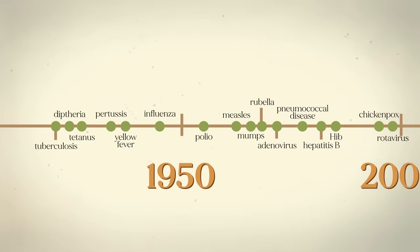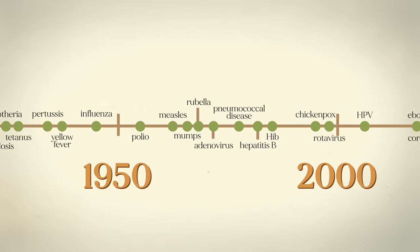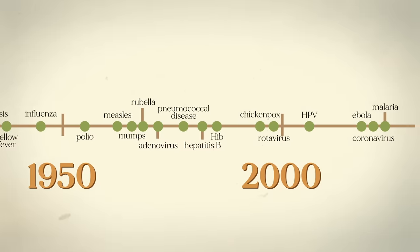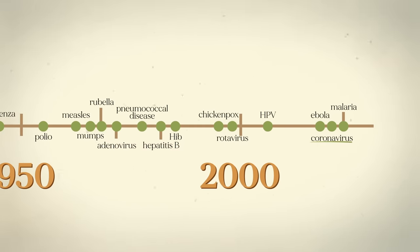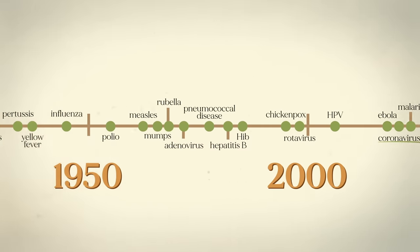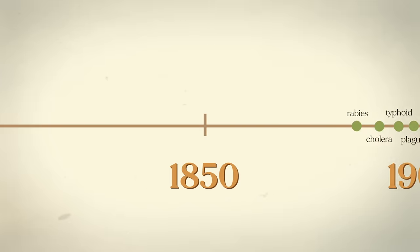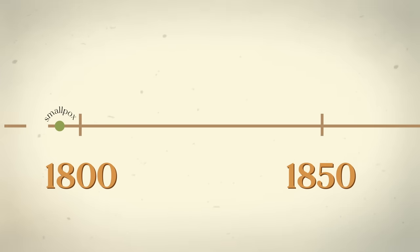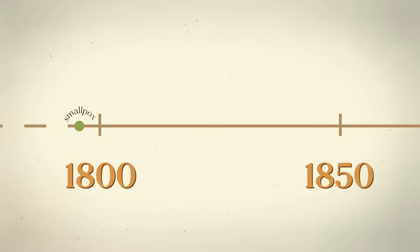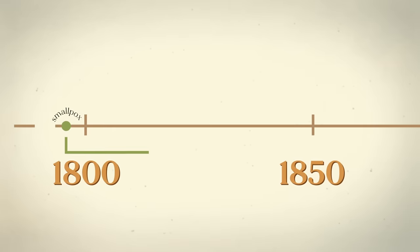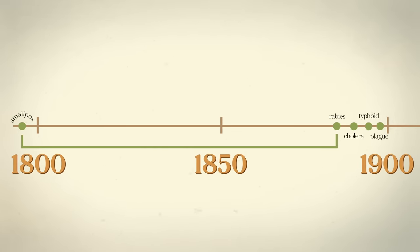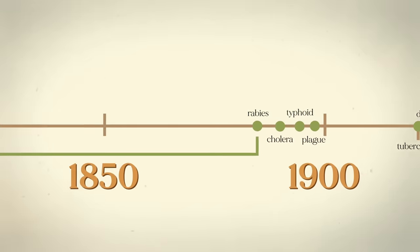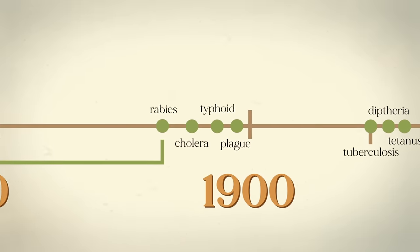This is a timeline of when different human vaccines were first used and documented. You'll find the new mRNA vaccines on the right and Edward Jenner's famous smallpox vaccine on the left. There are 89 years between the smallpox vaccine and the next one, the vaccine for rabies.